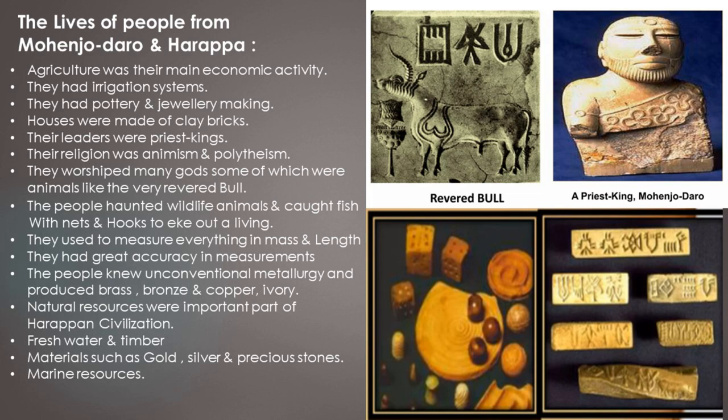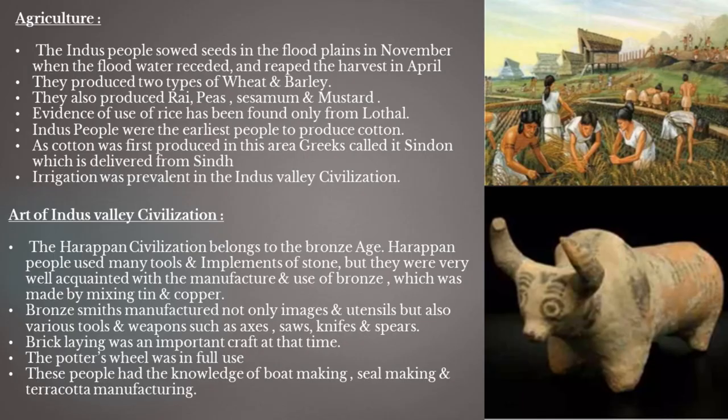The people had great accuracy in measurements and practiced unconventional metallurgy, producing brass, bronze, copper, and ivory. Natural resources such as fresh water and timber were important, and materials like gold, silver, and precious stones were also used. In agriculture, the Indus people sowed seeds in the flood plains in November and harvested in April. They produced two types of wheat and barley, as well as rye, peas, sesame, and mustard. Evidence of rice has been found only at Lothal. Indus people were the earliest to produce cotton, which is why Greek scholars called it Sindan, derived from Sindh. Irrigation was prevalent in the Indus Valley Civilization.